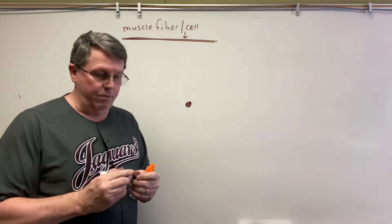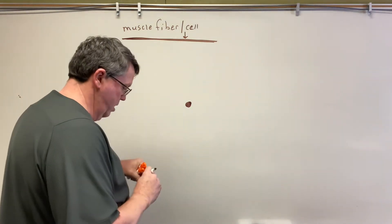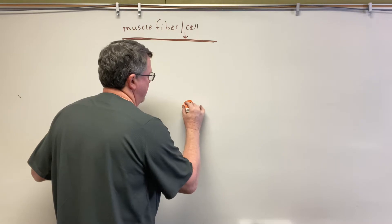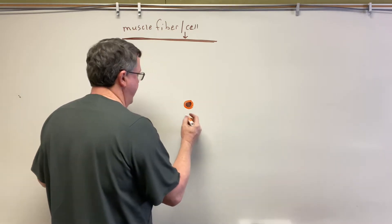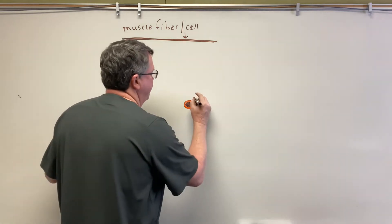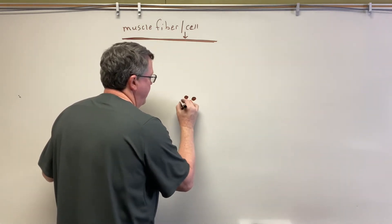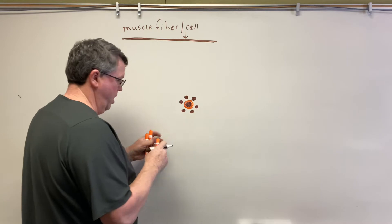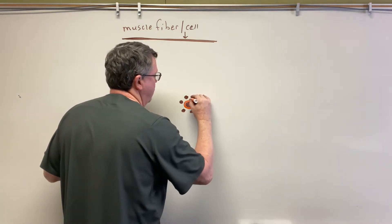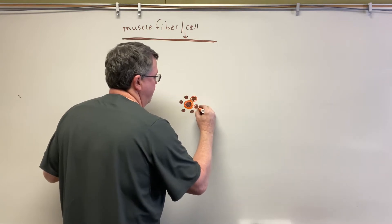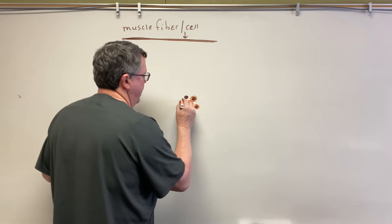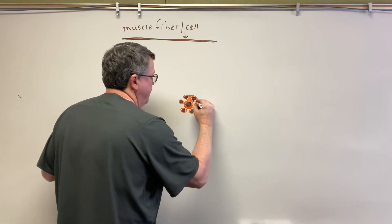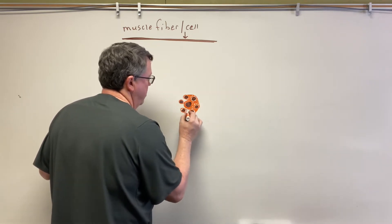So now surrounding my muscle fiber, I am going to have something called endomysium. This is called endomysium and it surrounds muscle fibers. So all of these muscle fibers here are surrounded by endomysium.